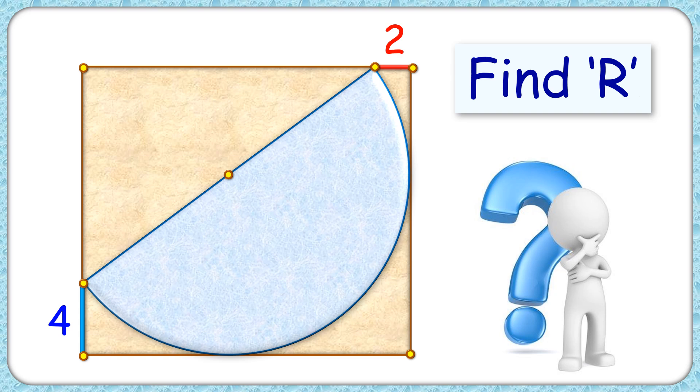Welcome everyone. In this interesting question we have a semicircle inside a rectangle. The length of this blue line segment is 4 cm, this red line segment is 2 cm.